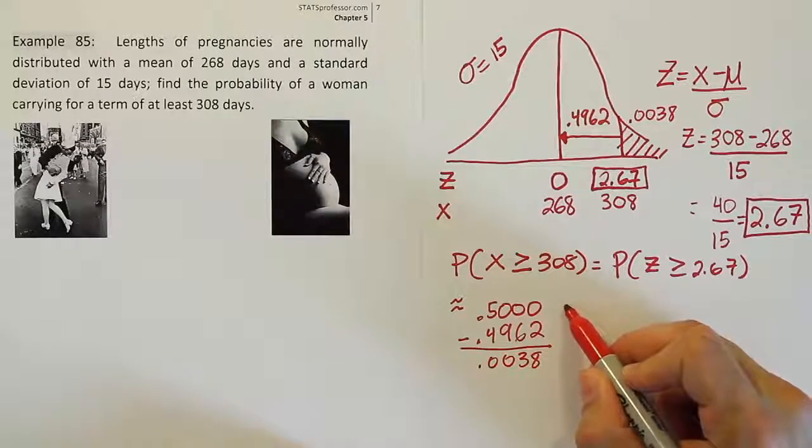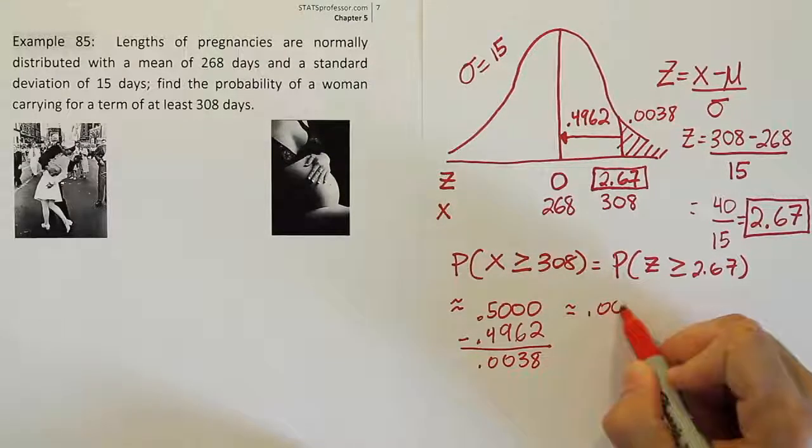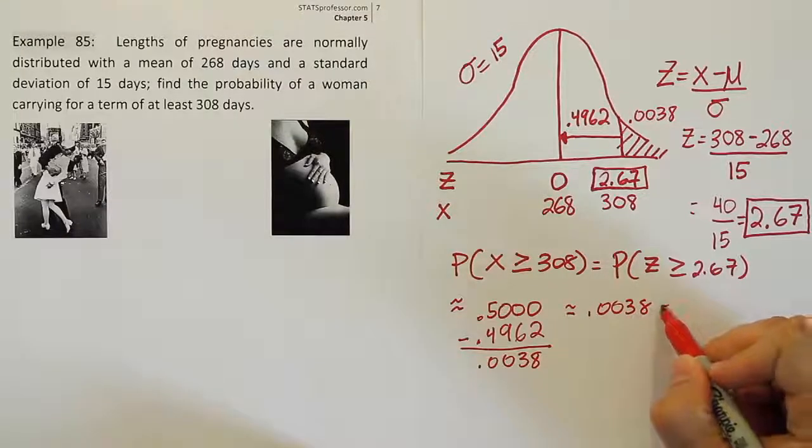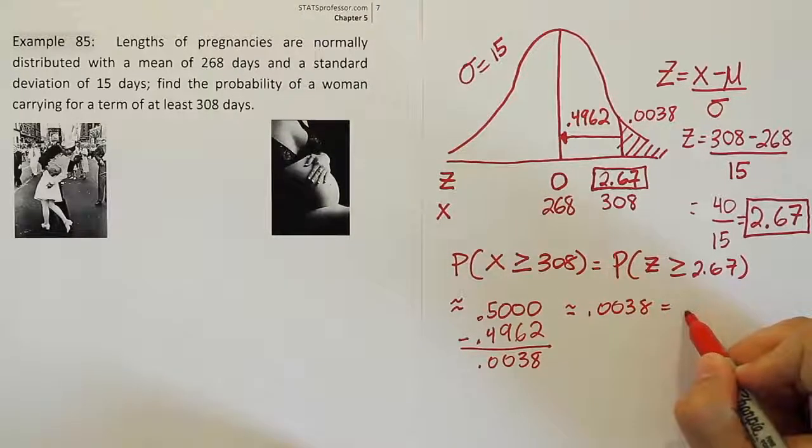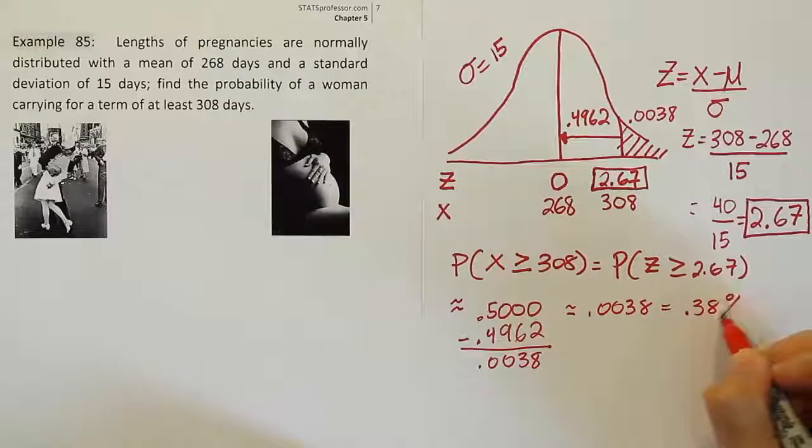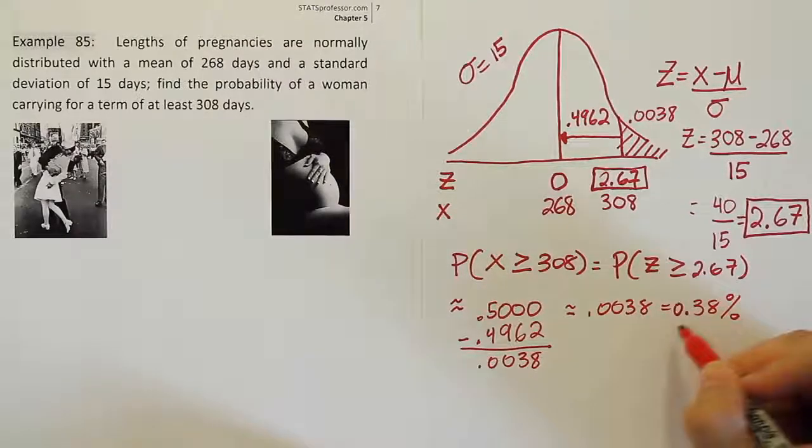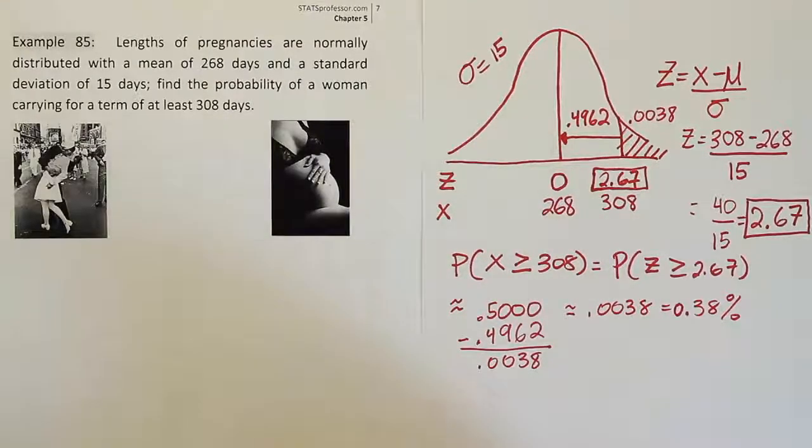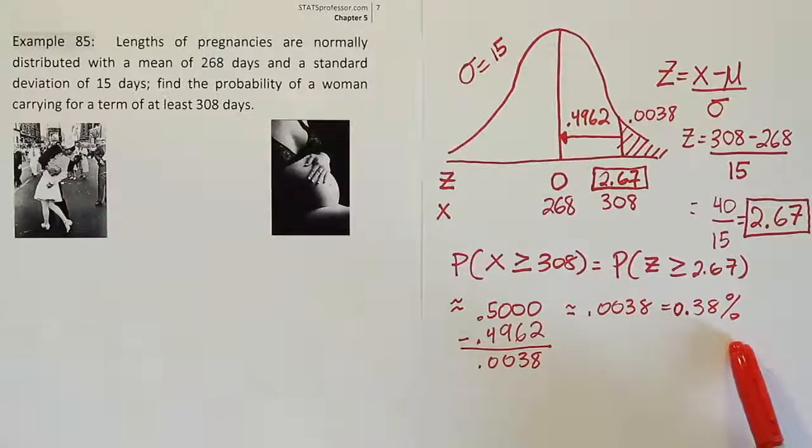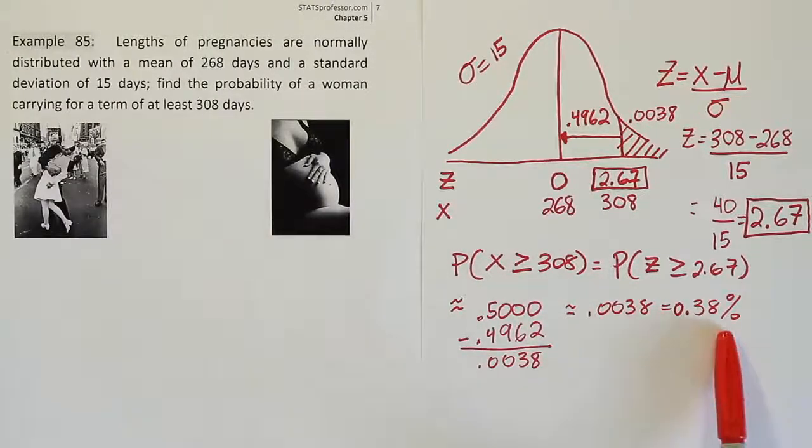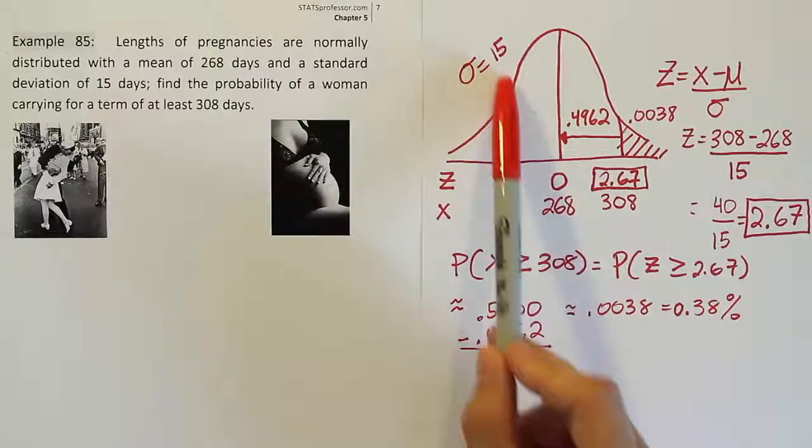So ultimately, we're going to say that this is approximately 0.0038, which is the same as 0.38%, right? 0.38%. So it seems to be a pretty small chance, a pretty small likelihood that a woman would carry for that length of time if this mean and standard deviation is correct.